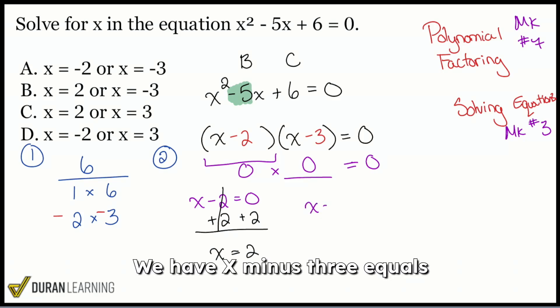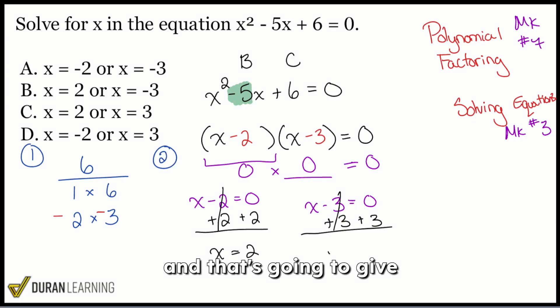Same deal. Let's try it out. We have x minus 3 equals zero. Okay. What do we do here? We'll add 3 to both sides. And that's going to give us x equals 3.